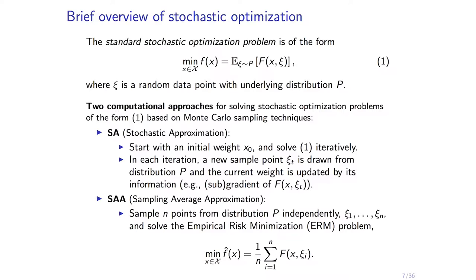The standard stochastic optimization problem is: minimize a function equal to the expectation over a random variable drawn from some distribution of capital F. There are two general approaches: stochastic approximation (SA) and sample average approximation (SAA). The distribution P is your choice — the expectation doesn't depend on P, but the variance might. We're going to use intelligent probabilities at the right spot to tie things together.